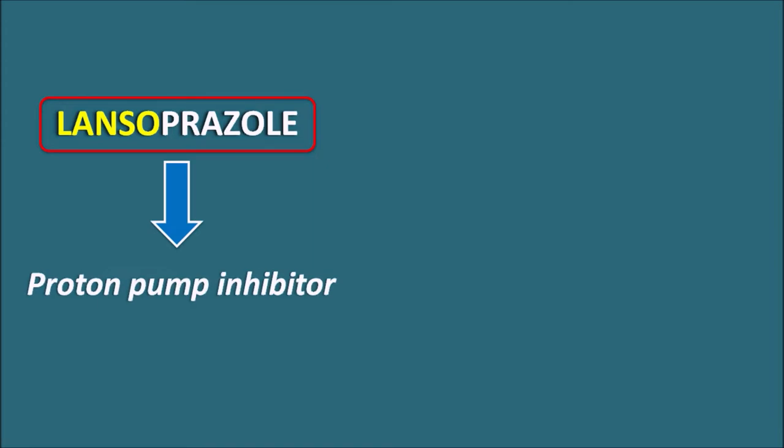Today in this video we are going to discuss about Lansoprazole — how this drug acts, what are the clinical uses, drug interactions and side effects. As the suffix '-prazole' indicates, this drug is a proton pump inhibitor, commonly indicated as PPI. Lansoprazole is a proton pump inhibitor that can be used for various conditions associated with the increased release of gastric acid.